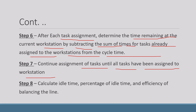Step 8, the last step, is to calculate idle time, percentage of idle time, and the efficiency of balancing the line. After assigning all tasks and starting the process, you identify at which workstations there is idle time, calculate it, find the percentage, and identify the efficiency of balancing the line. If there is any idle time at any workstation, you can plan corrective actions to eliminate it.